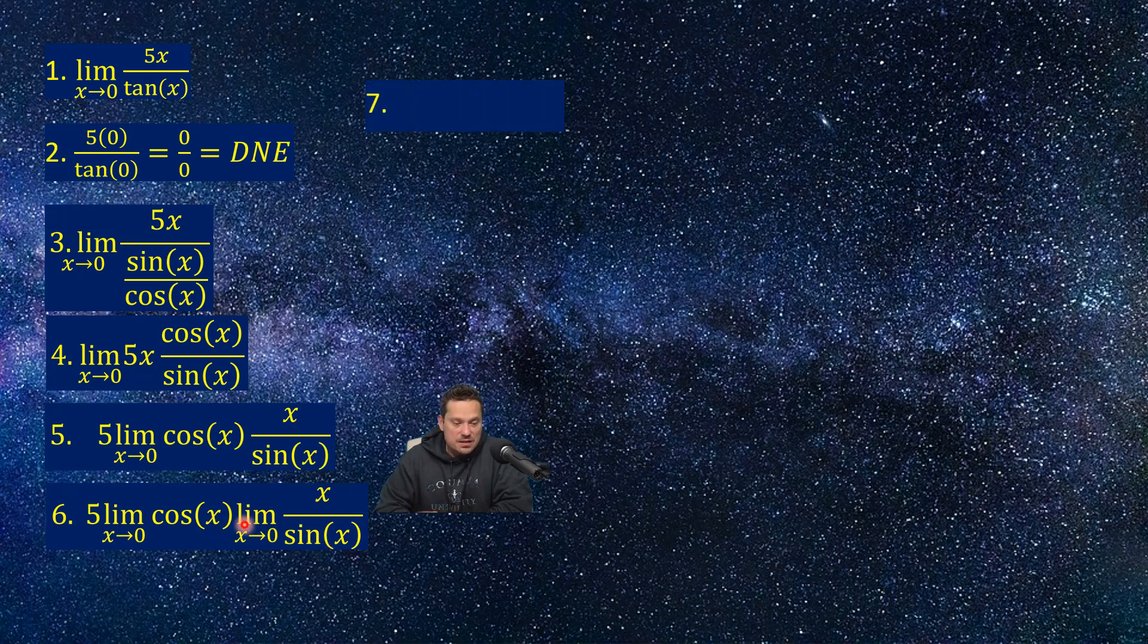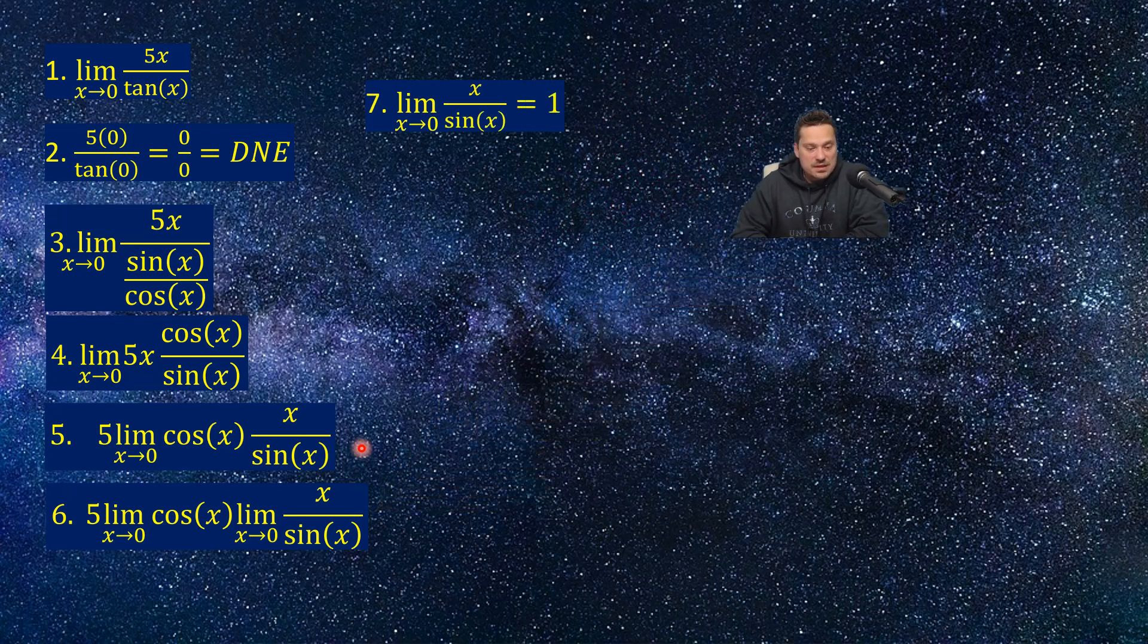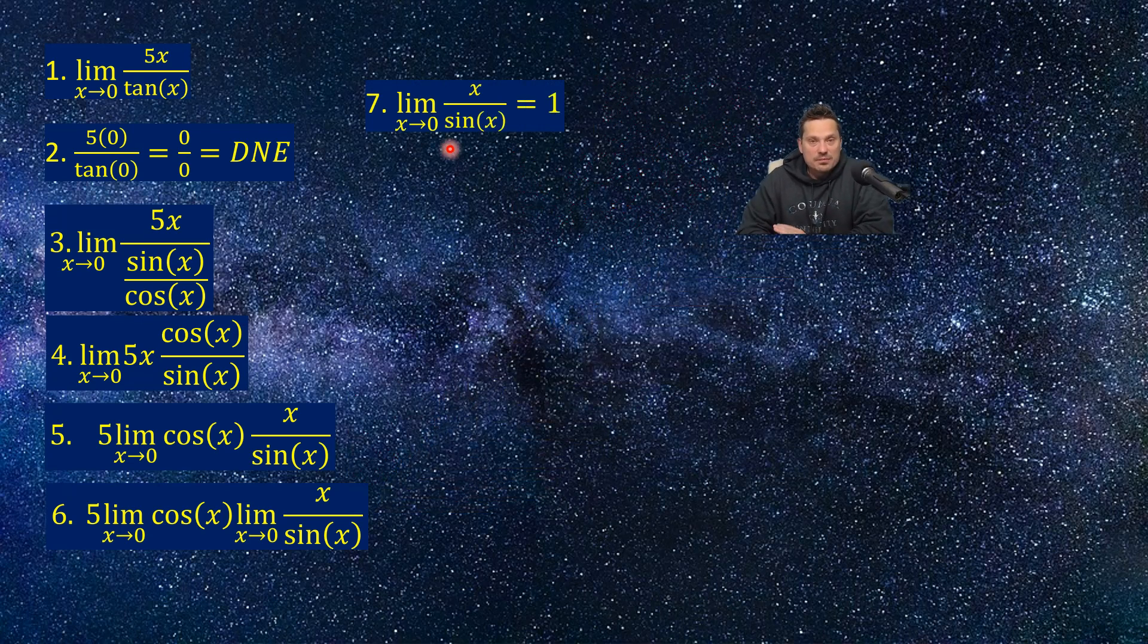We're getting close here. At the next stage, for example up at step 7, I need to now review some perhaps well-established limits, because I'm going to have to make use of those here. So one of those is the fact that the limit as x approaches 0 of x over sine x is equal to 1. There's another version that says the limit as x approaches 0 of sine x over x is equal to 1. Both of these are equal to 1.